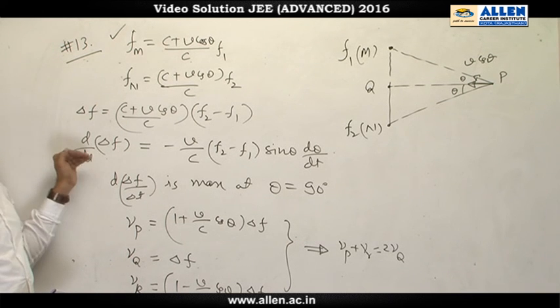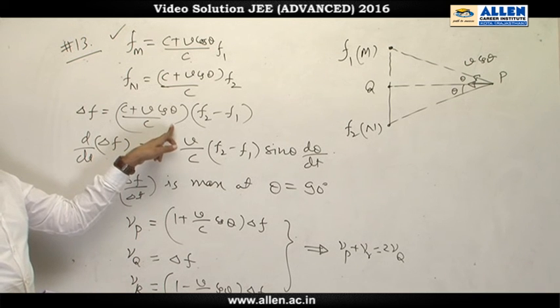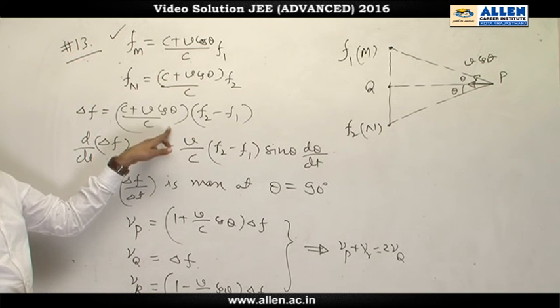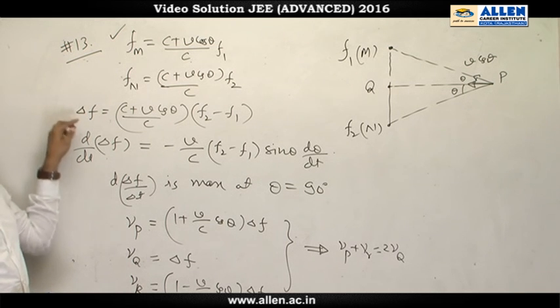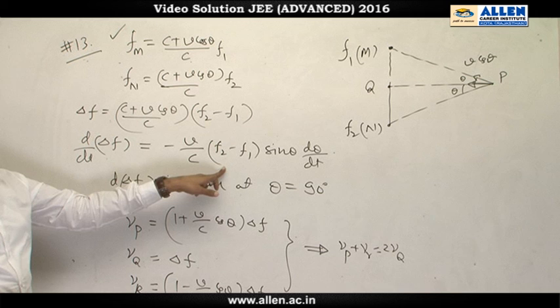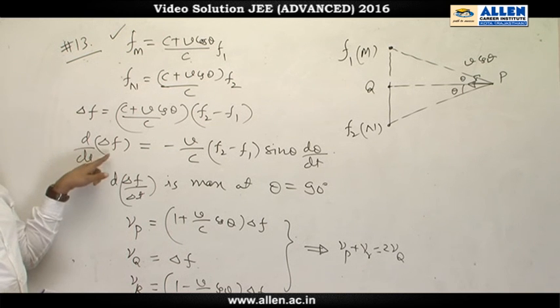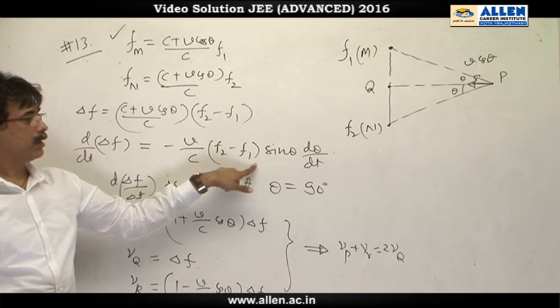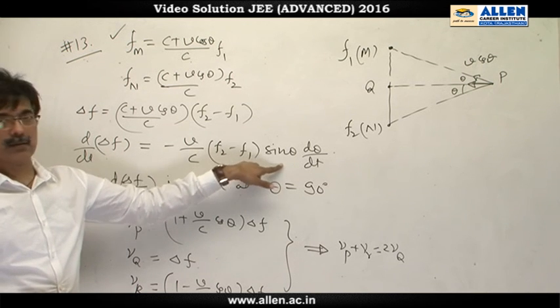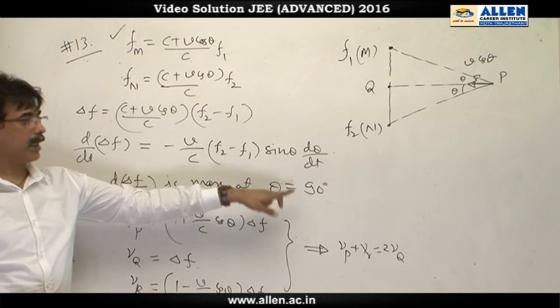Now, for rate of change of this frequency, we have to differentiate this function. As theta is varying, differentiating this delta f, we get the derivative. So the variation of the rate of change of beat frequency is according to this function. So nature of curve is approximately this, and this variation is maximum when theta is 90 degrees.